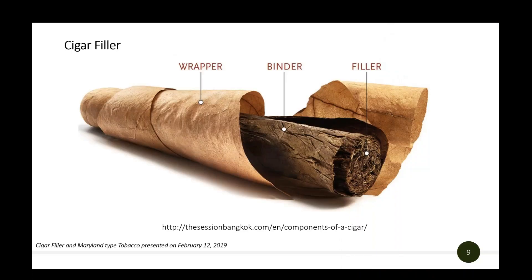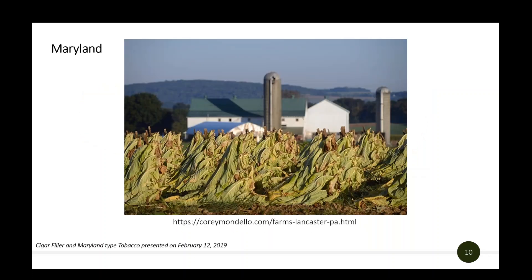The cigar filler type of tobacco is exactly what you would expect it to be — it's not the wrapper, it's not the binder, but it's the filler. The Maryland type is similar to burley, in that it is air cured and stripped. The stalks are cut, hung in an open-air type of barn, air cured, and then the leaves are stripped off once they have cured. The primary use for this type of tobacco is for American and Swiss blended cigarettes.